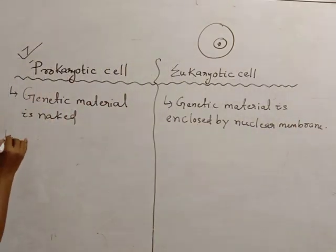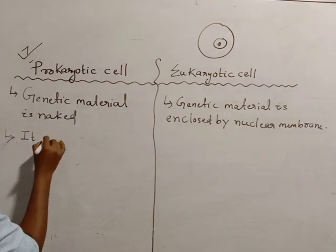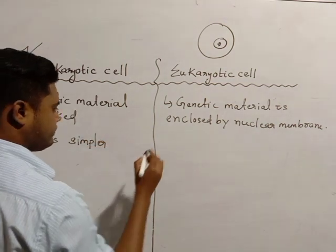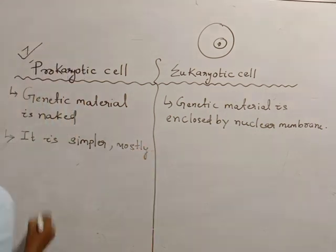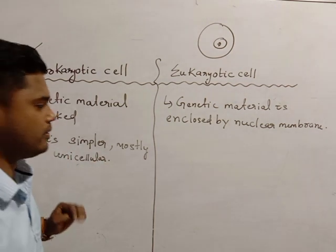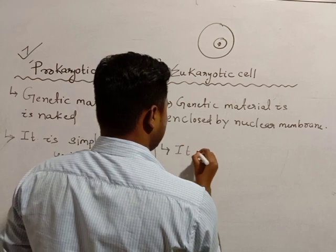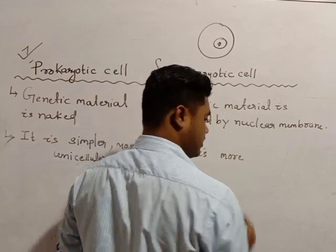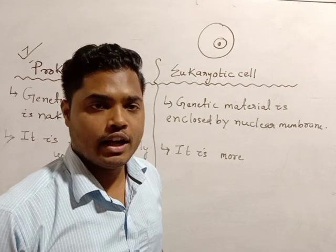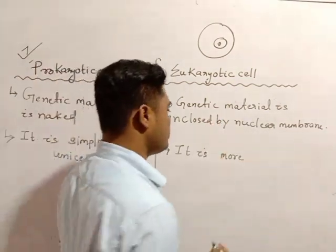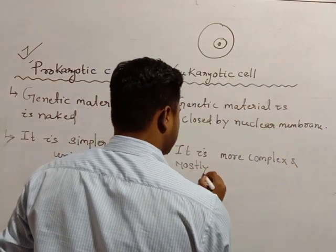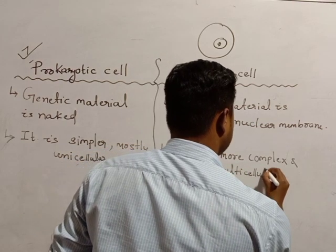The last point is: prokaryotic cells are simpler in nature and mostly they are unicellular. Eukaryotic cells are more complex because more and more cell organelles are added - mitochondria, ribosomes, Golgi body, lysosomes. They are more complex and mostly eukaryotic cells are multicellular.